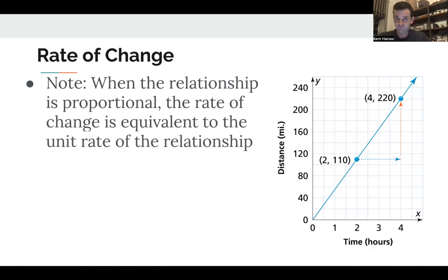So I do want to note when the relationship is proportional, like in this case, right? It goes through the origin. We have a straight line. When the relationship is proportional, the rate of change is equivalent to the unit rate. So the unit rate of 55 miles per hour is also the rate of change, because this is a proportional relationship, but imagine if for some reason, you know, you were counting, and they already started out at 120 and went up like that. Well, this is not a proportional relationship, but maybe it's still increasing at a rate of 55 miles per hour.